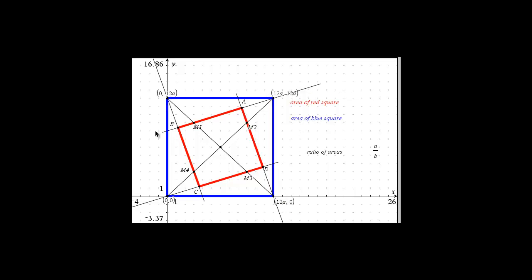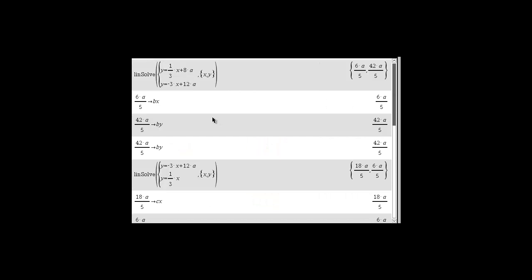I decided to use a coordinate proof so I called the vertices of the blue square these values in terms of A, and then I had to find the coordinates of A, B, C and D in terms of A. The plan was to find the equations of these lines here that make up those four sides, those four red sides. So I found the equations of those in terms of A and then solved each linear system in terms of A.